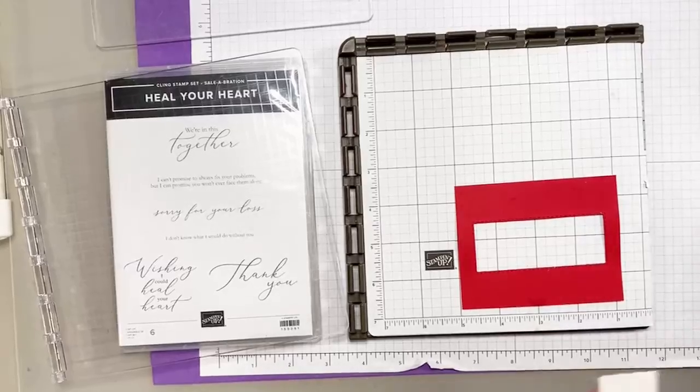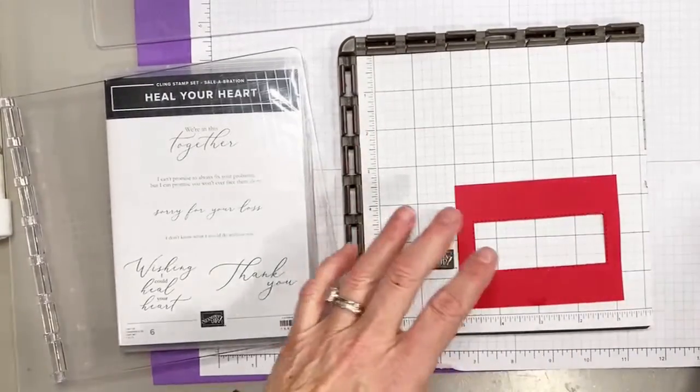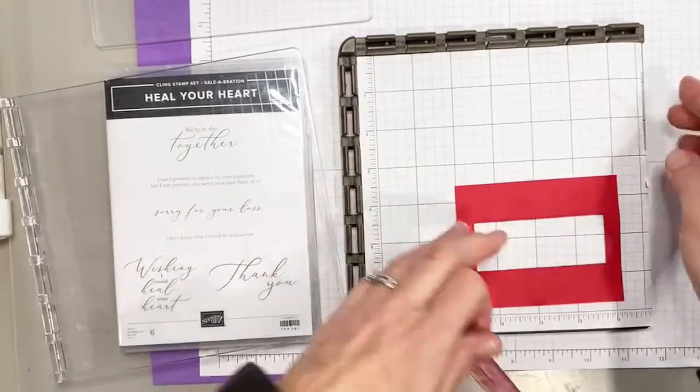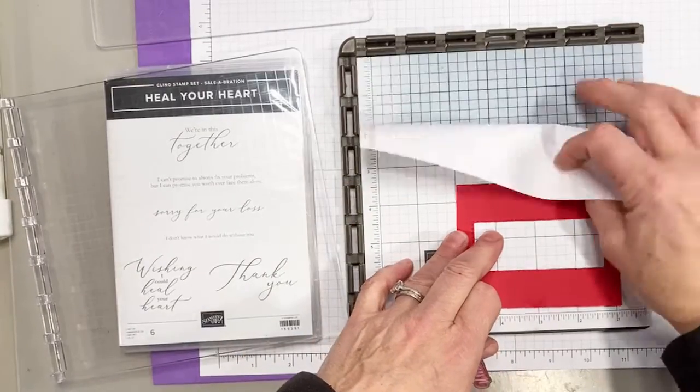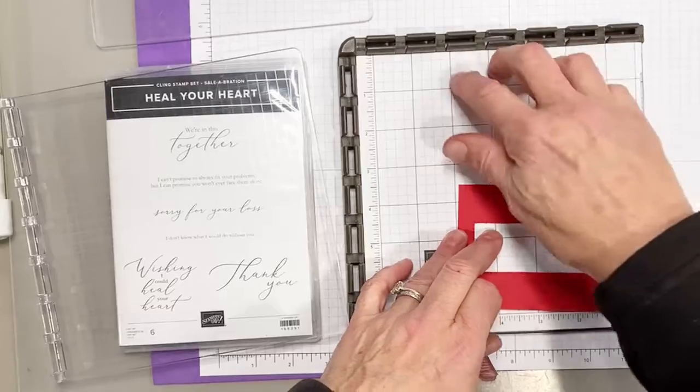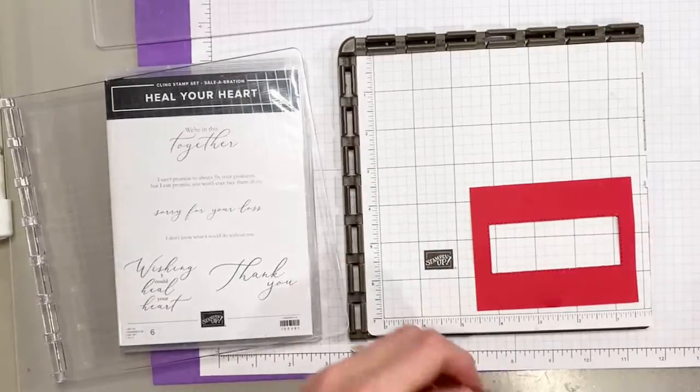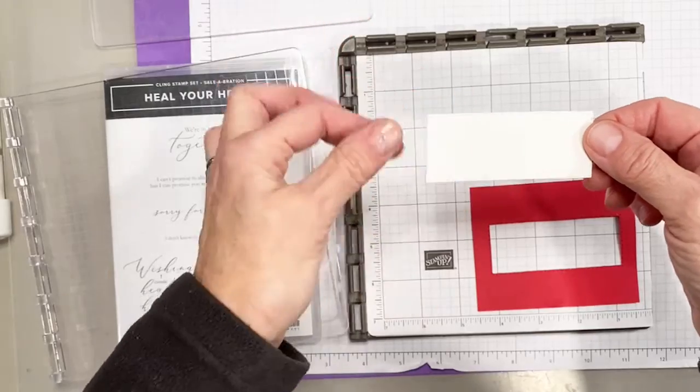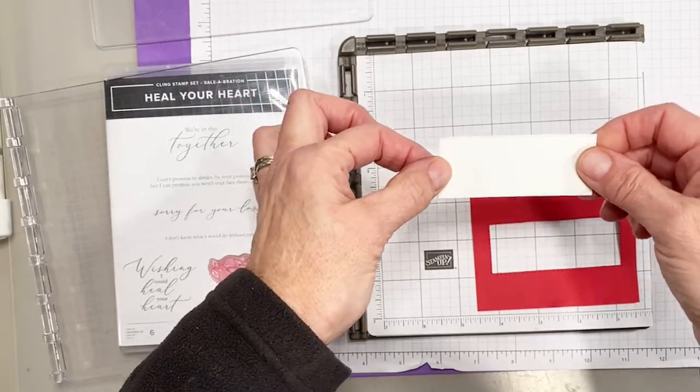So I have some things here to show you. I'm going to be using a photopolymer stamp. There's no cushion on that, so I'm going to keep the cushion in on my Stamparatus. And I want to stamp repeatedly on this stitched rectangle that I have.